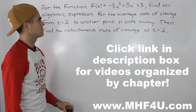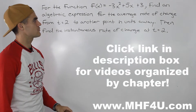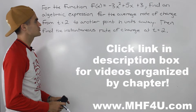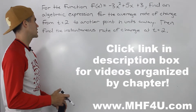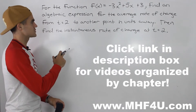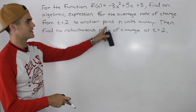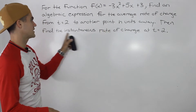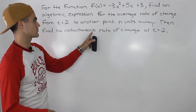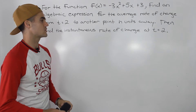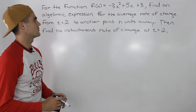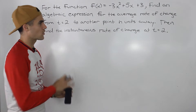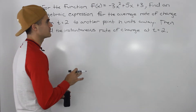Moving on to the next question. We have a function negative 3x squared plus 5x plus 3, and we have to find an algebraic expression for the average rate of change from t equals 2 to another point h units away. Then we find the instantaneous rate of change at the t value of 2. Pretty similar to questions we've been doing before, just worded a little bit differently.